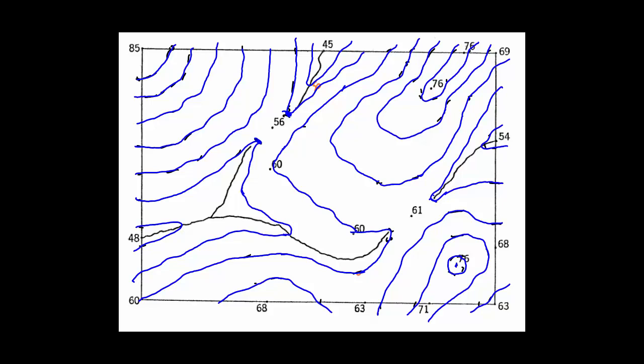So hopefully this has been helpful for helping you understand how we generate contours when we have collected our data on an irregular spacing on the key features of the landscape.